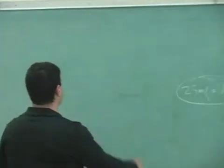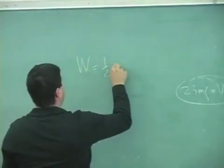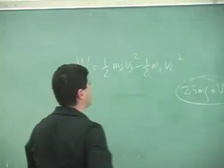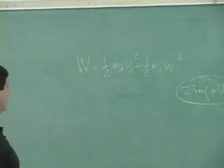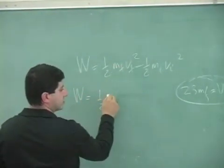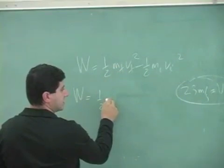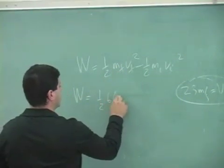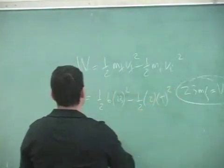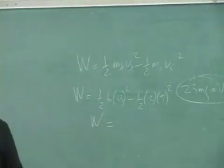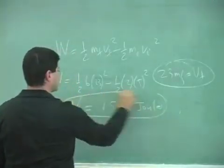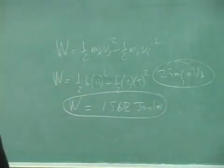Half m final v final squared minus half m initial v initial squared. You could use that again, changing kinetic energy. So half times the final mass which is six times 63 squared minus half times two times five squared. So the work should also be less because it was getting heavier.